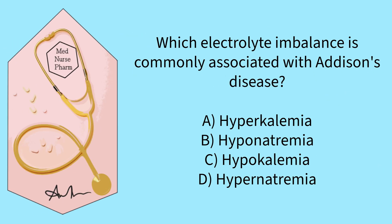Remember to pause the video after I read the question and then we'll discuss the answer. Which electrolyte imbalance is commonly associated with Addison's disease? Options: hyperkalemia, hyponatremia, hypokalemia, or hypernatremia.